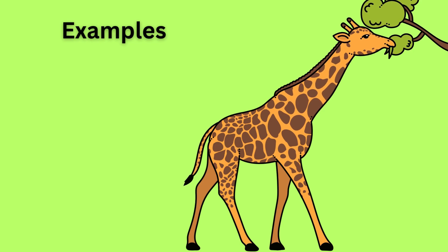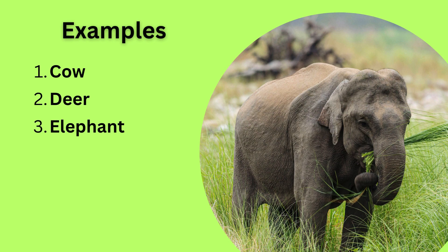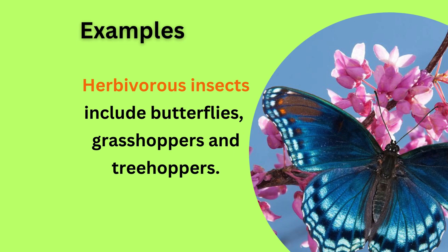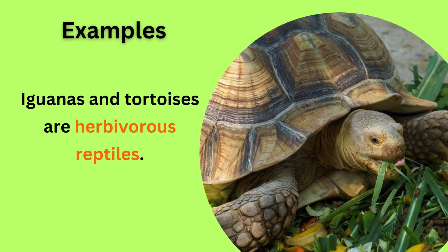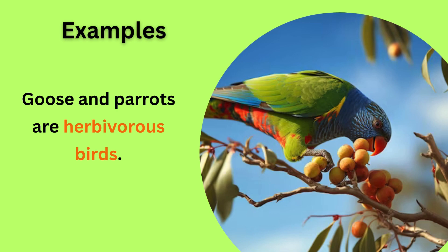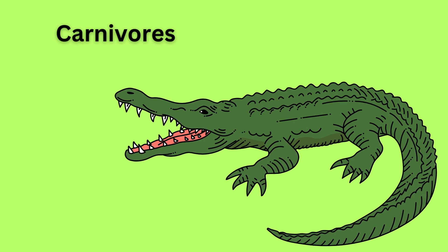Some common examples of herbivorous animals are cows, deer, elephants, giraffes, and koalas. Herbivorous insects include butterflies, grasshoppers, and treehoppers. Iguanas and tortoises are herbivorous reptiles. Goose and parrots are herbivorous birds.